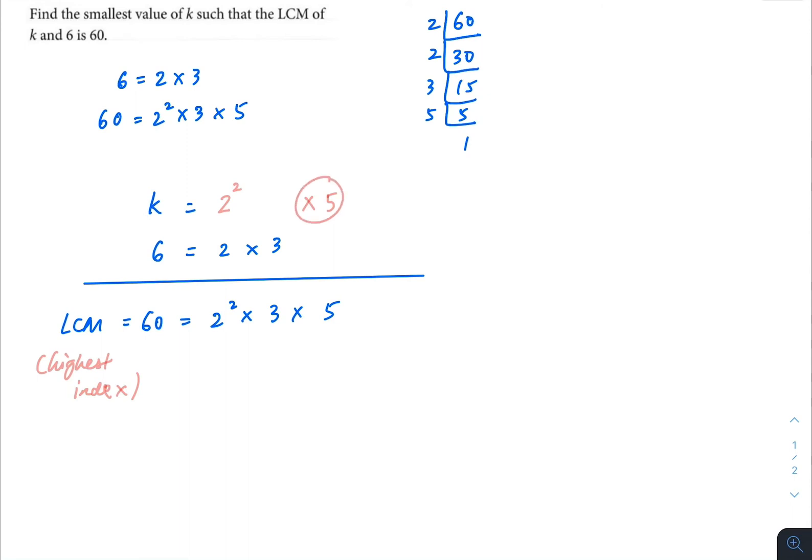So this 5 from the 60 will come from the k. So here we go. So our k will be equals to 2 squared times 5, which is equals to 20. So our unknown is 20.